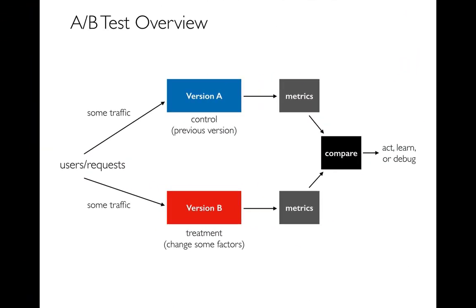Here's an overview of the A/B test process. You have some users and you split that traffic between multiple versions — alternating requests between version A and version B of a page. You collect metrics from both cases, make a comparison, and then take some action or decision. Perhaps you learned something or used this information to debug.